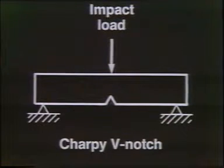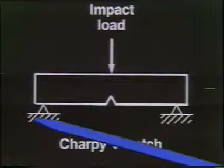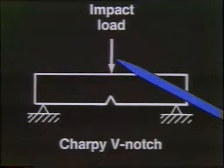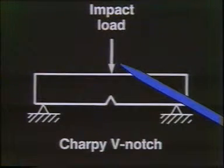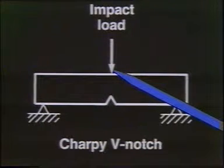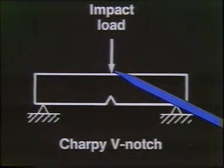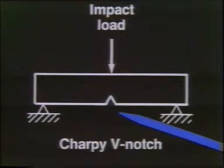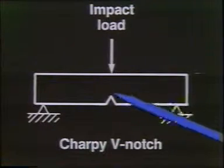The notched bar specimen illustrated in the slide is a very tiny thing — only about 10 millimeters on a side — but it has a purposefully placed notch in it. We impose a load on it at velocities of about 18 feet per second in a pendulum-type machine. We measure the energy stored in the pendulum, let it strike the specimen, break the specimen, and then measure its height on the other side. Subtracting the two potential energies gives us the energy absorbed by the specimen.